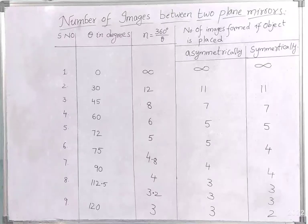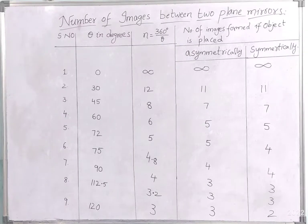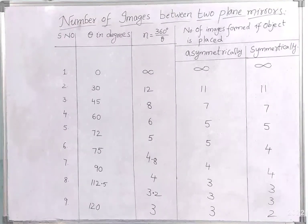In the seventh situation, the angle is 90 degrees. So n = 360/90, which gives 4. Since 4 is even, we do 360/theta minus 1, giving 3 images, both for asymmetrical and symmetrical placement. In the eighth situation, the angle is 112.5 degrees. So 360/112.5 gives 3.2 — again a decimal, so we neglect the decimal and get 3 images for both cases.